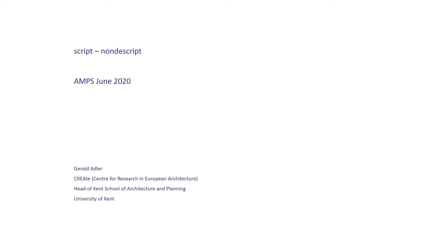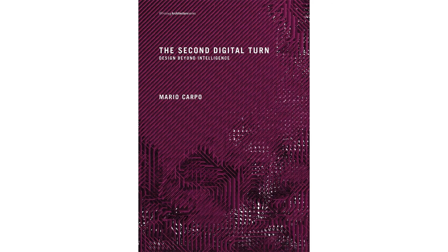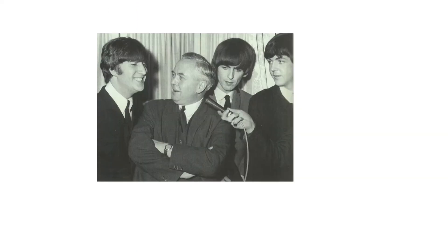This paper takes its view from Mario Carpo's book The Second Digital Turn in 2017, and enlarges on the dichotomies of liberal invention and post-Fordian economies suggested by him. It looks in particular at technical and technological invention half a century ago, at the peak of Harold Wilson's white-heat-of-technology speech of 1964. Then, as now, there were conflicting and polarised views of architectural invention, production, and authorship, with lessons for us today.